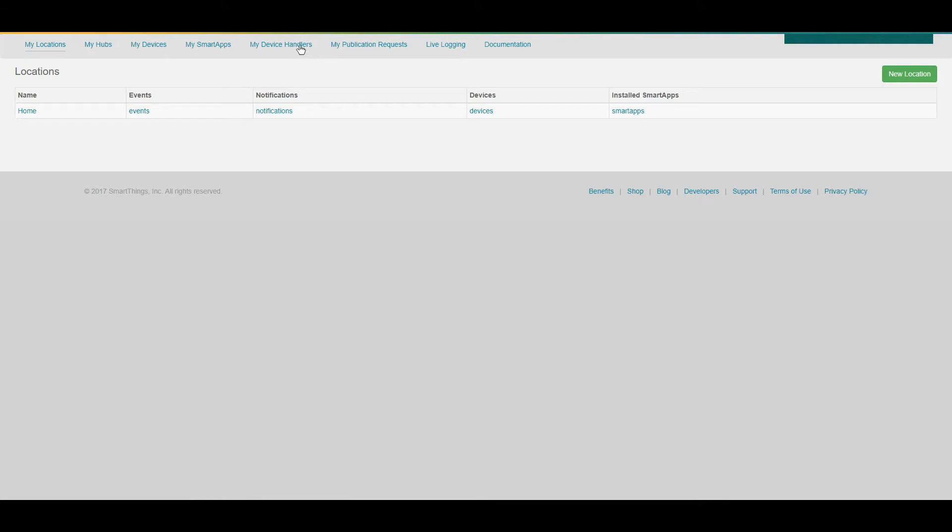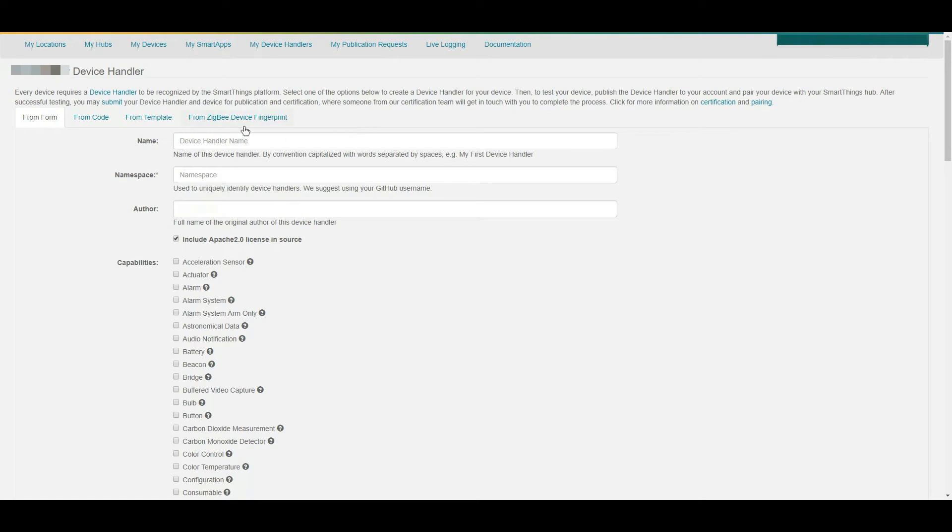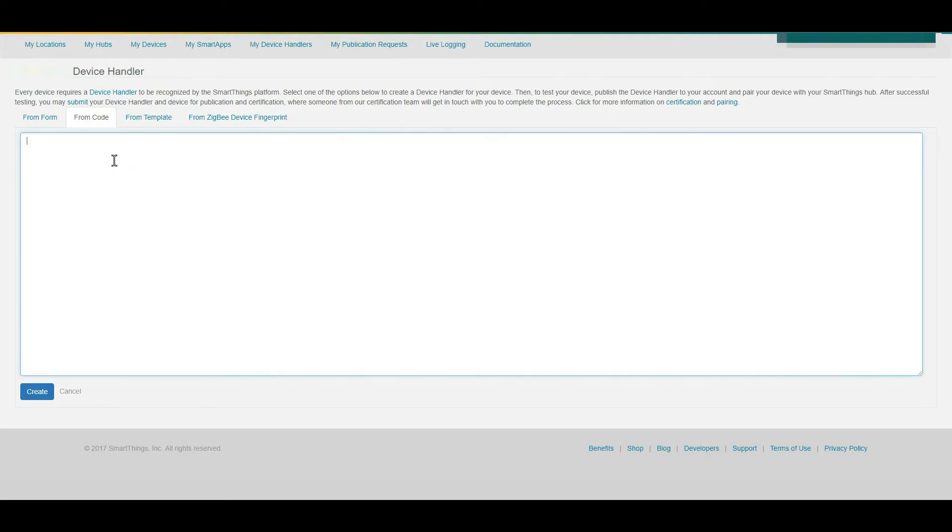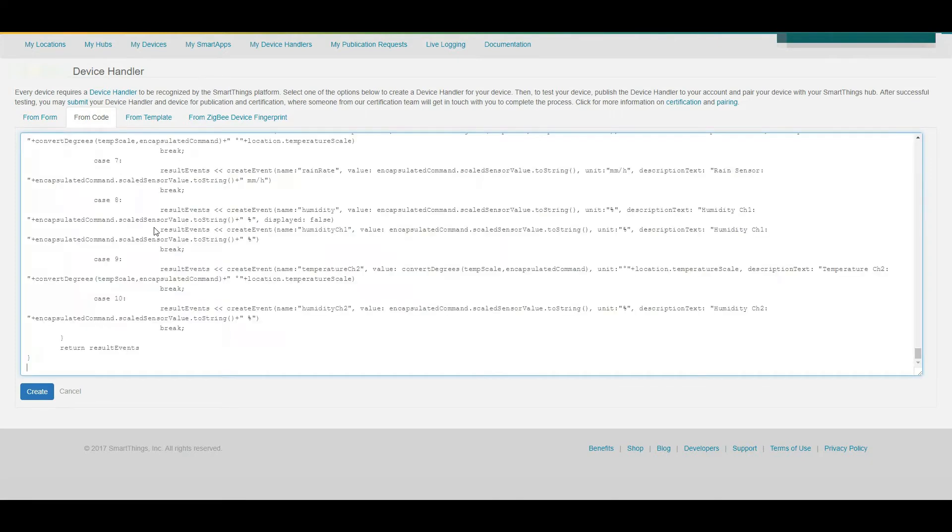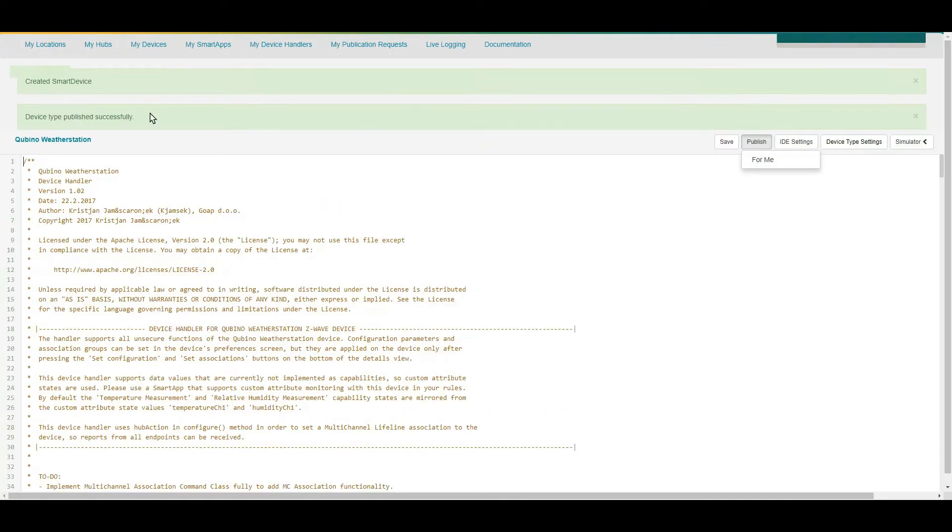Log in to your SmartThings page and navigate to the My Device Handlers tab. Select Add One Now. You will be sent to the Device Handlers Edition page. Select the From Code tab and paste the data from your clipboard into this box and click Create. Once created, you need to select the Publish button and then select For Me from the drop-down that appears. At this point, you should be ready to add your device.